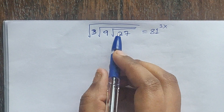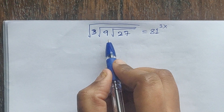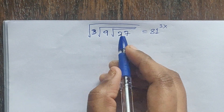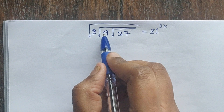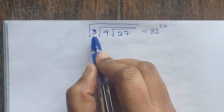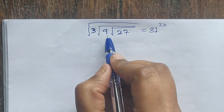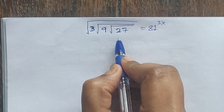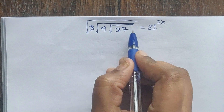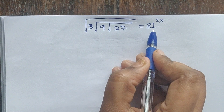Hello everyone, welcome back to our channel. Here we have a problem: how do we solve the square root of 3 times square root of 9 times square root of 27, equal to 81 to the power of 3x?